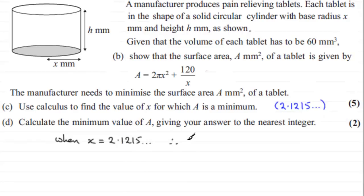Then we've got therefore A equals 2π multiplied by 2.1215 and we've got to square that. Plus 120 then all over 2.1215 and so on.